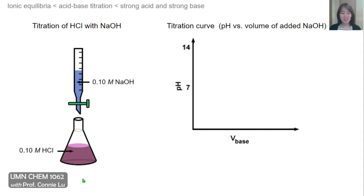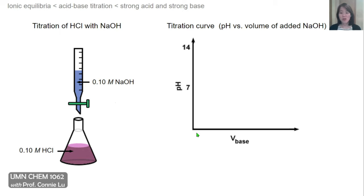In this first titration experiment, we have HCl, a strong acid, as our analyte, and we're going to use the strong base sodium hydroxide as the titrant. Both concentrations are set to be equal at 0.1 molar. We like to monitor the pH changes during titration, plotted in a titration curve where the y-axis shows the pH of the solution and the x-axis shows the volume of added base.